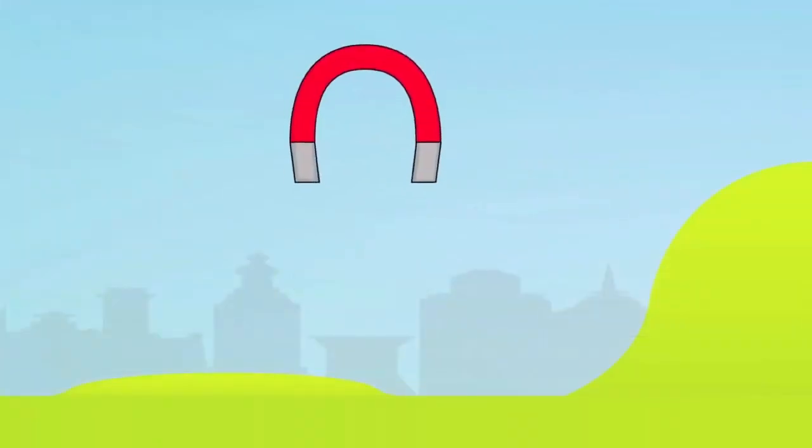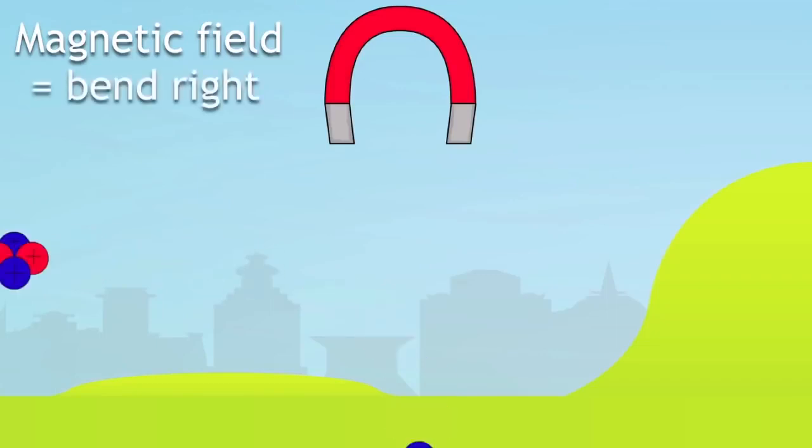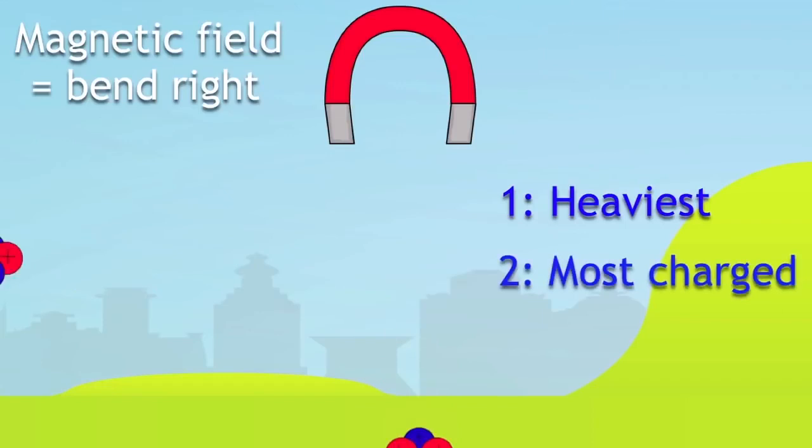It's also strongly affected by a magnetic field. So here we've got a whole beam of alpha particles, and these alpha particles are going through a magnetic field. And when they go through the magnetic field, they bend quite a lot. This tells us two things. One, that it's the heaviest of the radioactive particles. And two, it's the most heavily charged type of radiation.